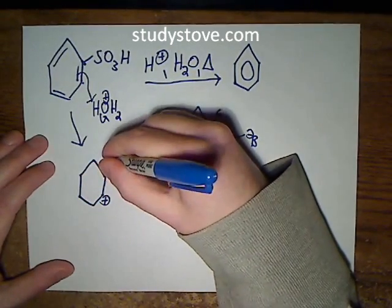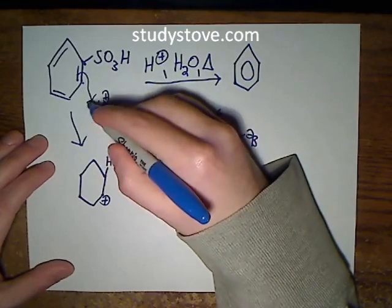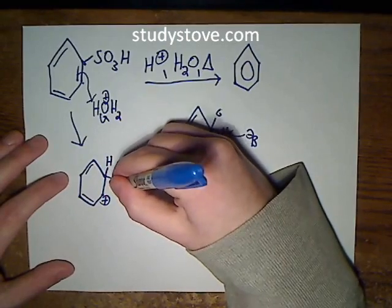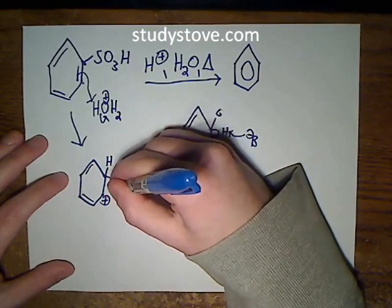Here's the hydrogen or the proton that we just took. Let's draw those double bonds too. And here's the sulfonic acid group that we're trying to remove.